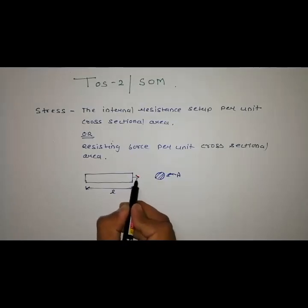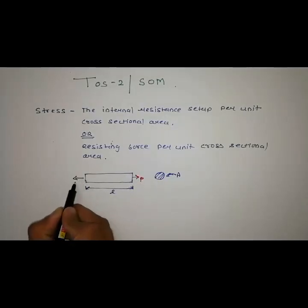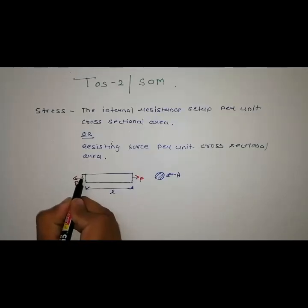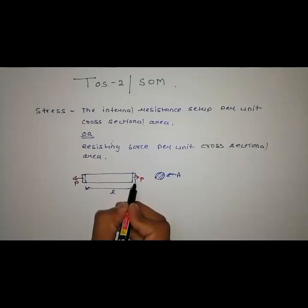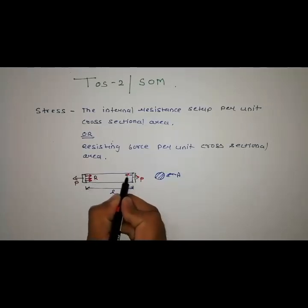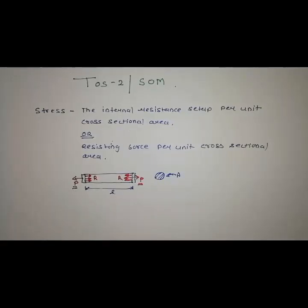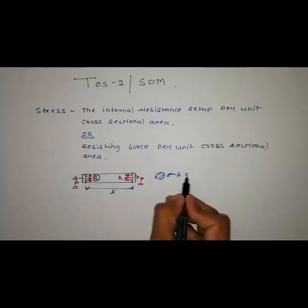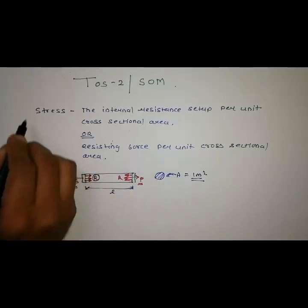Consider external force P is applied on this rod along the length. So what will happen? This rod will try to deform. But initially, this rod will apply resisting force against this external load P to resist this deformation. So, this resisting force per unit cross-sectional area is known as stress.